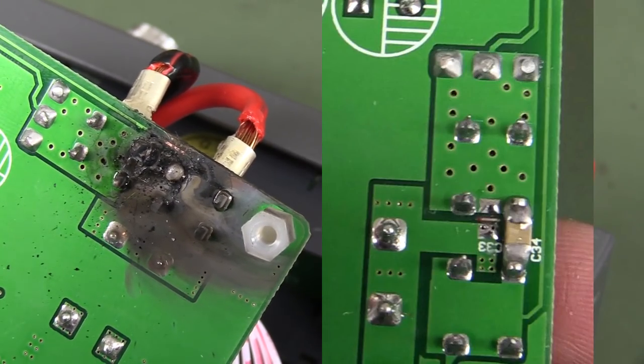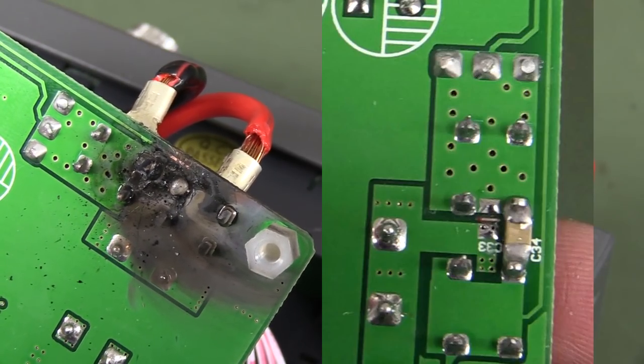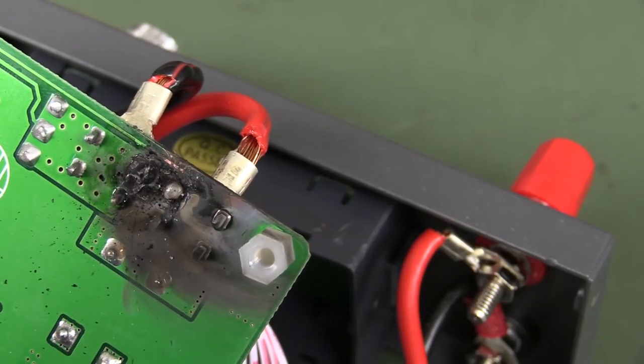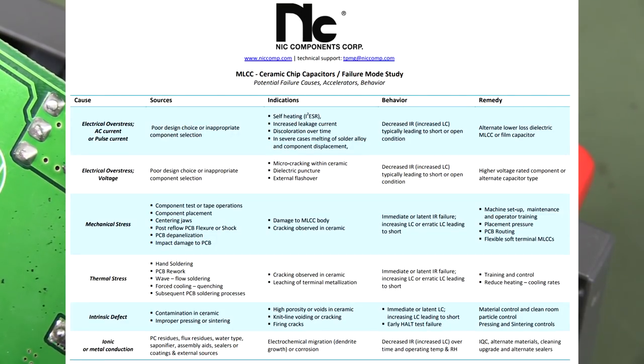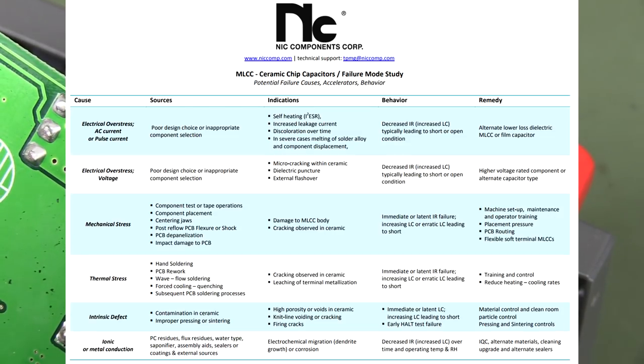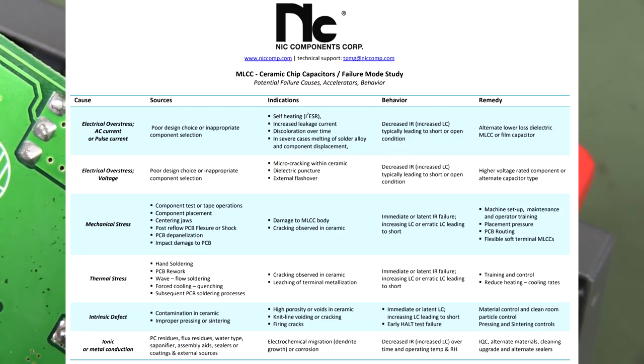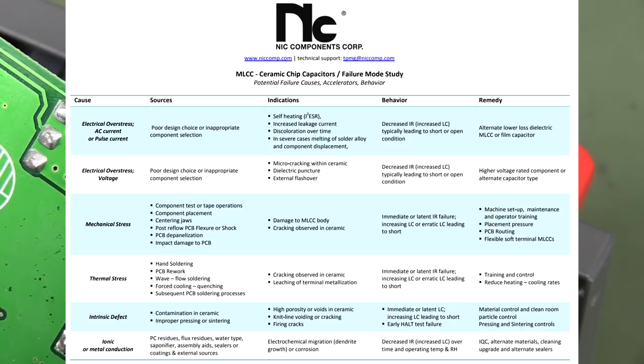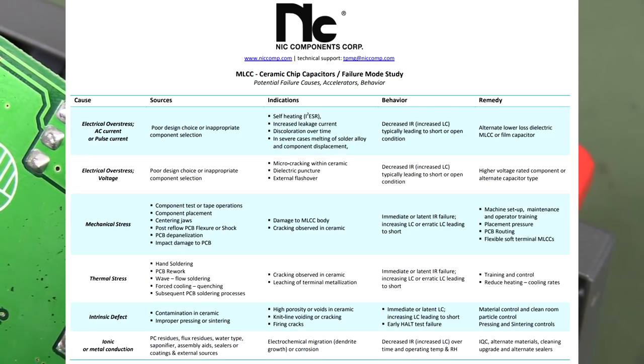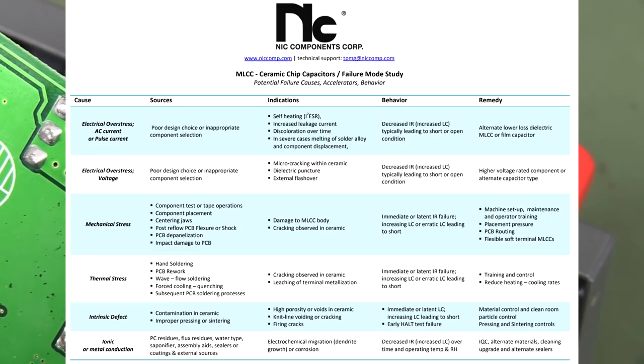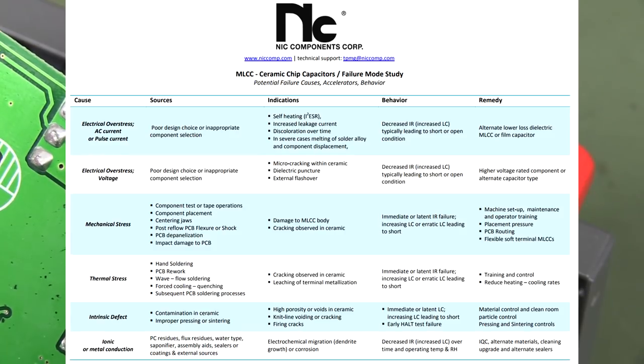And the problem with ceramic caps is when they fail, they usually fail short. So, if you want the utmost in reliability from a design, you might put, say, two of them in series. Yes, you halve the capacitance, but then if one of them breaks down for whatever reason, it's a manufacturing problem, it's an over-voltage stress issue, whatever, then it's covered by the other one in series with it. So, it's not a problem. One of them's short, one of them's just an open cap. So, you just lose half your capacitance. It's not a problem.